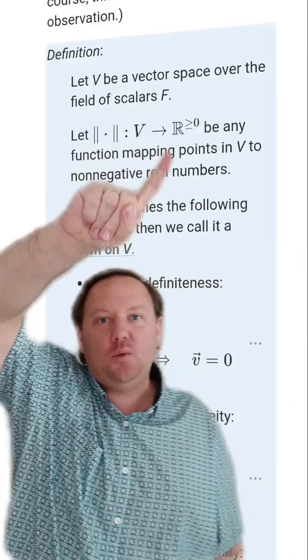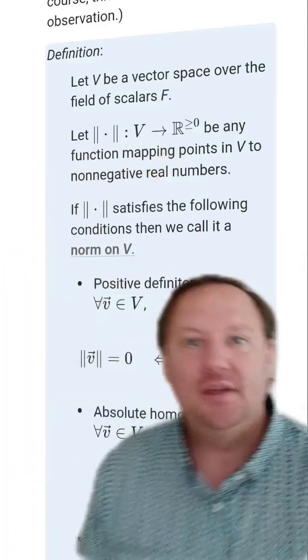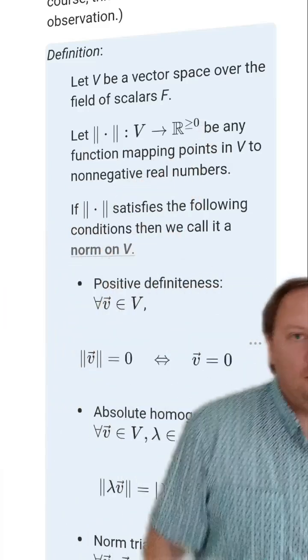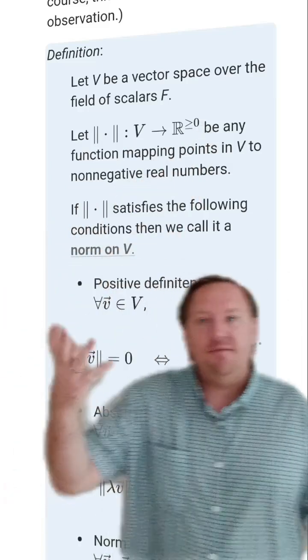Now notice that a norm is going to have to return non-negative values. That makes intuitive sense of what we're trying to model as some notion of size. Size should be non-negative. But it should also have the following properties.